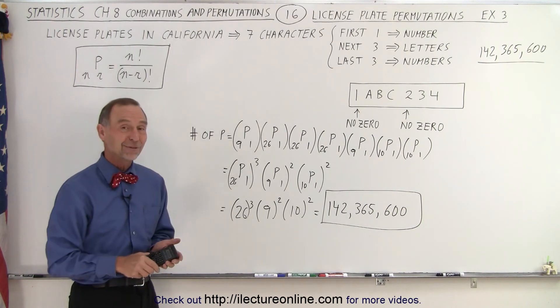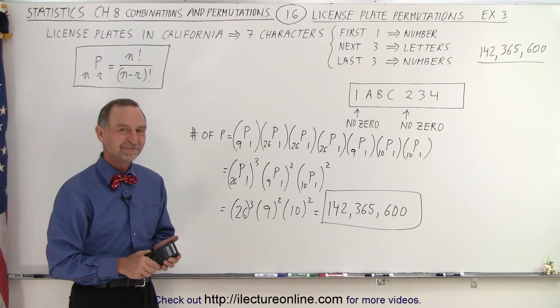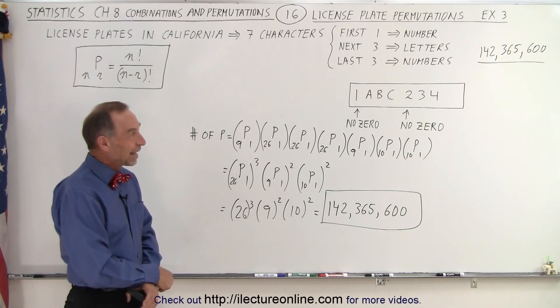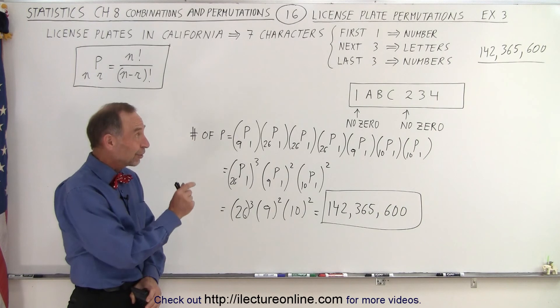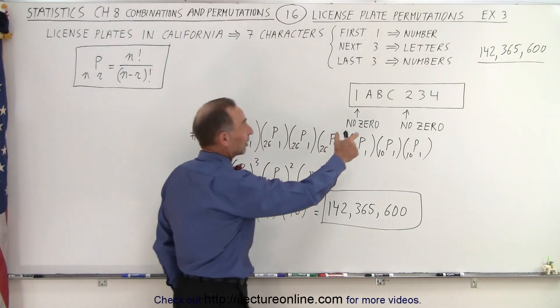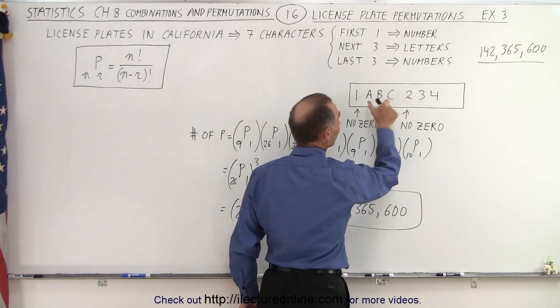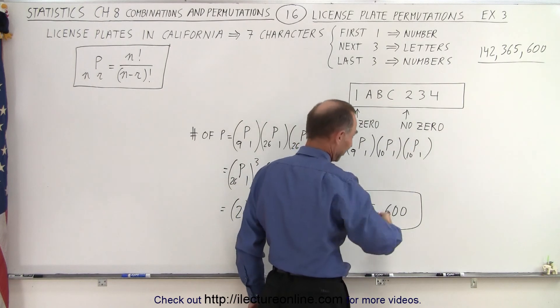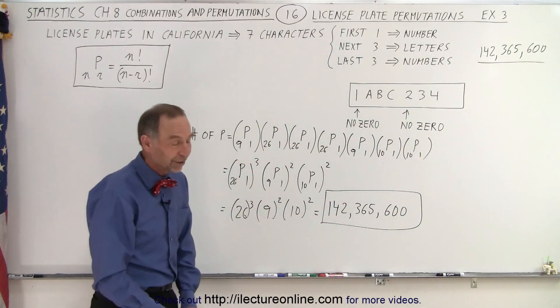Couldn't they just have flipped the groups of letters and the numbers around? They could have. So what they could have done, they could have moved the letters over here and the numbers over here. And that would have essentially doubled the number.